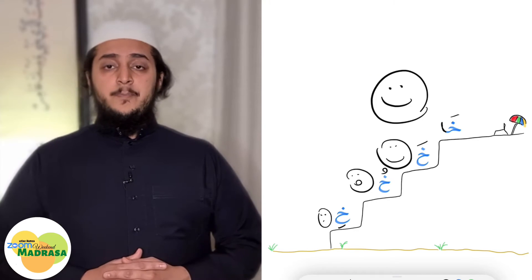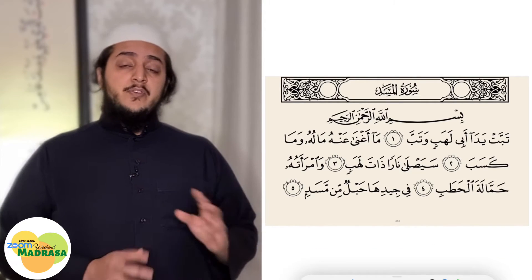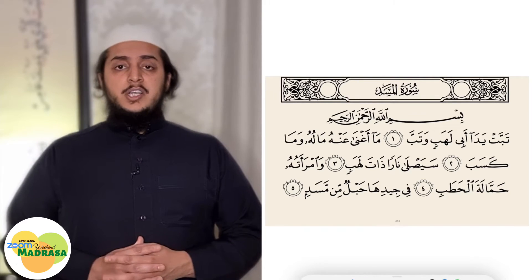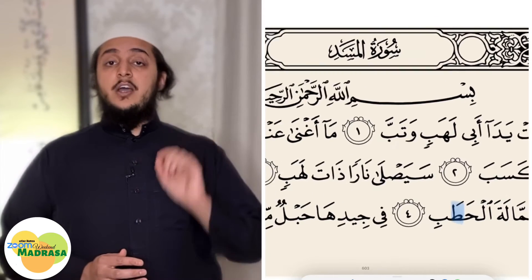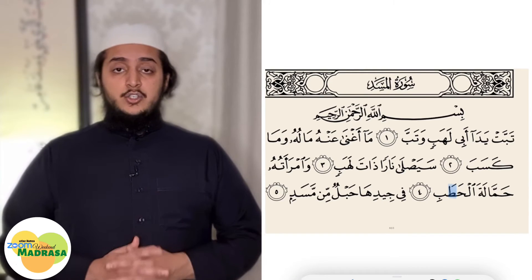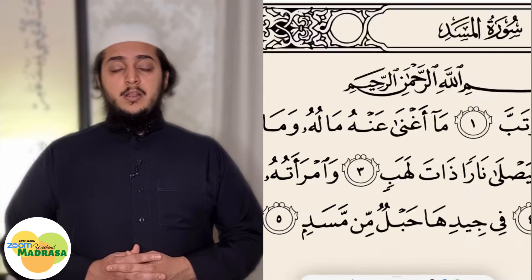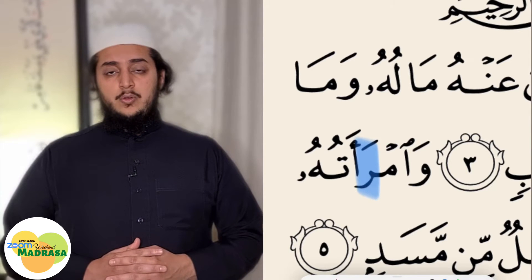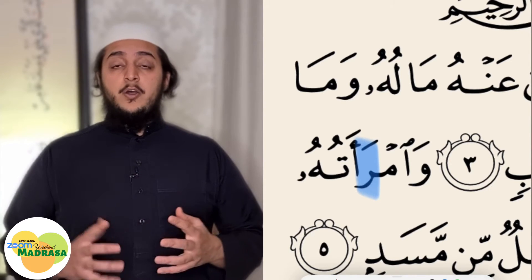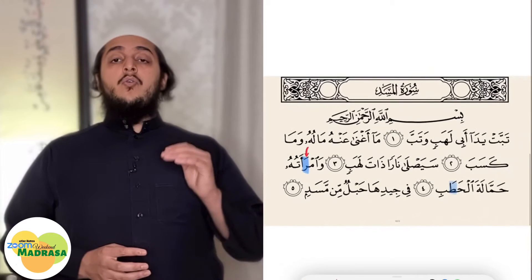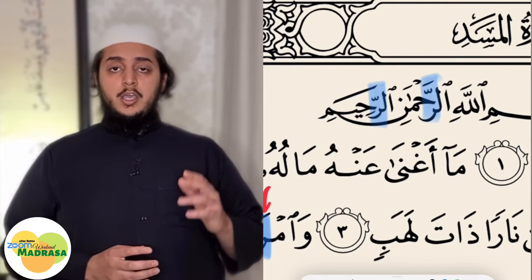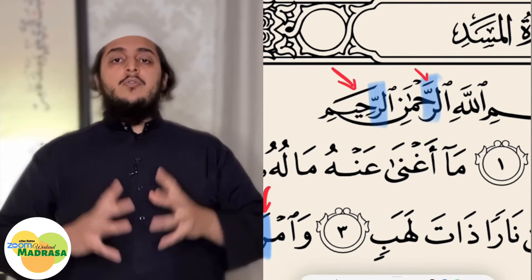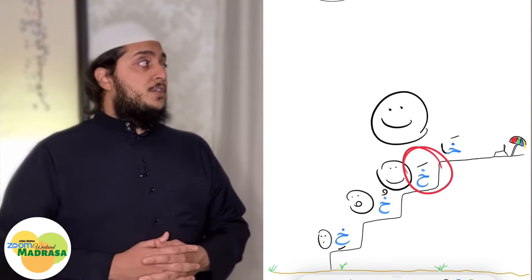If you see it with the fatha and then with an alif afterwards, then it's 'khaw' — it's really full mouth. Now if you remember all the previous surahs that we learned, when I highlighted the full mouth letters, I only highlighted them when they have fatha on top. For example, in Surah Al-Masad, 'ra'atuhu' — the ra is full mouth because it has a fatha on top.